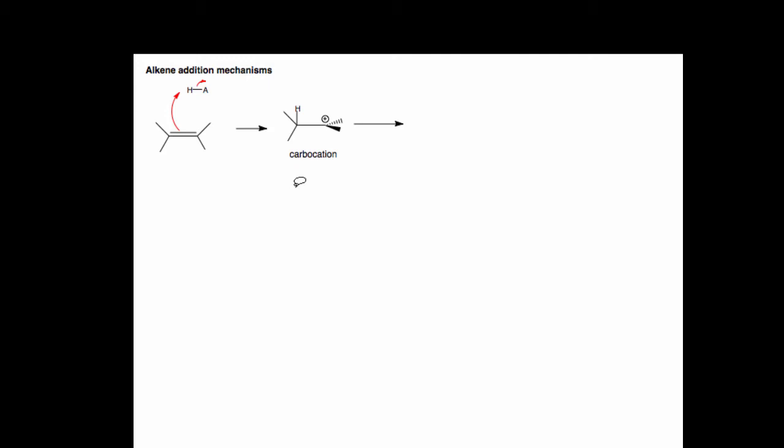And before we go on, let's remember what makes a carbocation intermediate stable. If a carbocation has a sigma bond next door to it, that sigma bond can donate a little bit of electron density into the empty p-orbital of the carbocation. This helps stabilize the carbocation, and in fact, the more sigma bonds you have next door, the more stable the carbocation is.